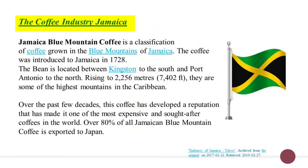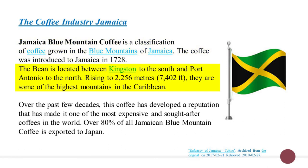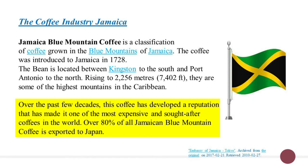Jamaica Blue Mountain coffee is a classification of coffee grown in the Blue Mountains of Jamaica. The coffee was introduced to Jamaica in 1728. The bean is grown between Kingston to the south and Port Antonio to the north, rising to 2,256 meters — amongst the highest mountains in the Caribbean. Over the past few decades, this coffee has developed a reputation making it one of the most expensive and sought-after coffees in the world. Over 80% of all Jamaican Blue Mountain coffee is exported to Japan.